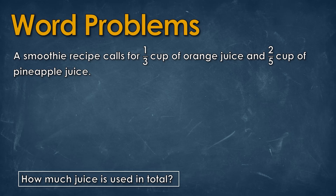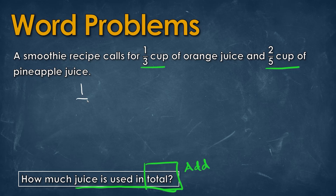For the next question, a recipe calls for 1 third of a cup of orange juice and 2 over 5 cups of pineapple juice. How much juice is used in total? The word 'total' means we're going to be adding. So we have 1 over 3 plus 2 over 5, and since the denominators are not the same we have to figure out the least common denominator.